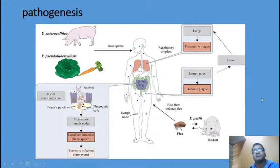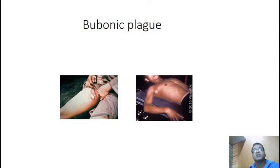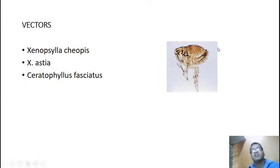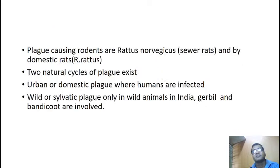This is bubonic plague, showing swelling of the inguinal and axillary lymph nodes. The vectors that transmit Yersinia pestis from rats to humans are Xenopsylla cheopis, Xenopsylla astia and Ceratophyllus fasciatus. Plague-causing rodents are Rattus norvegicus (sewer rats) and Rattus rattus (domestic rats). Two natural cycles of plague exist: urban or domestic plague, where humans are infected, and wild or sylvatic plague, only in wild animals. In India, gerbils and bandicoots are involved in the sylvatic cycle.